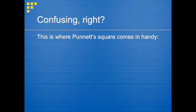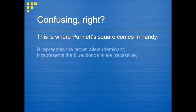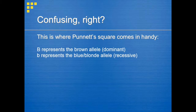For the eye color example, brown is dominant and blue is recessive. Let's use the letter B to represent the alleles. Should the brown allele be capital or lowercase? Since brown is dominant, we will use a capital B for the brown allele and a lowercase b for the blue allele. If an organism has at least one dominant allele, then their physical features — their phenotype — will portray the dominant trait.